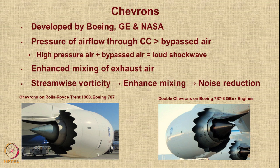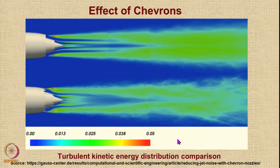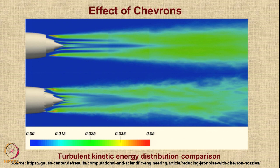Here is an example of a double chevron configuration, where chevrons are mounted on both the outer and inner exhaust. Without chevrons, turbulent kinetic energy remains quite large throughout the exhaust plume. With chevrons installed, the turbulent kinetic energy distribution is far more rapidly dissipated, reducing jet noise significantly.